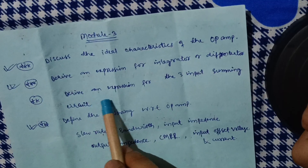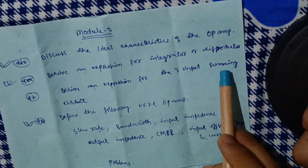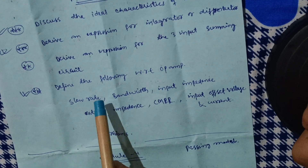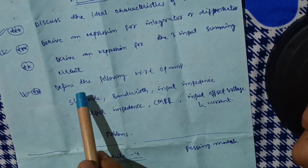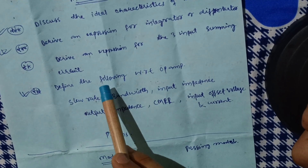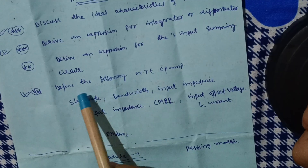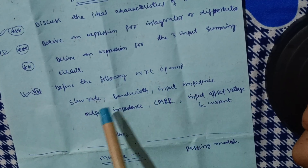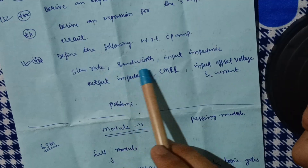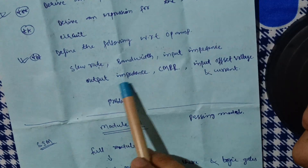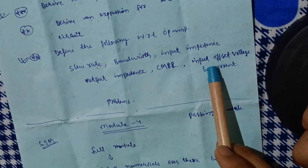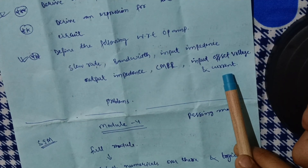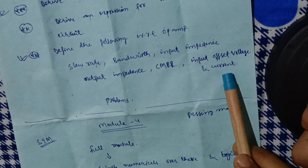Next one is: derive an expression for the three-input summing circuit. And also some definitions are consistently and frequently asked in the examination — that is, define the following with respect to op-amp: slew rate, bandwidth, input impedance, output impedance, CMRR, input offset voltage and current. So these are the theory concepts you have to cover in module three.